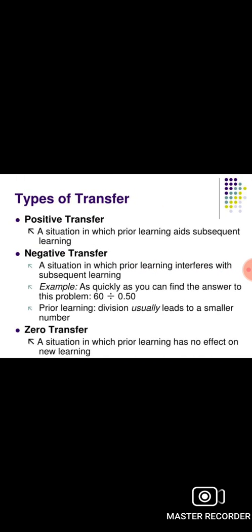The first important type is positive transfer. When we learn through knowledge and skills — for example, knowing addition, subtraction, multiplication, and division — that is a positive transfer.